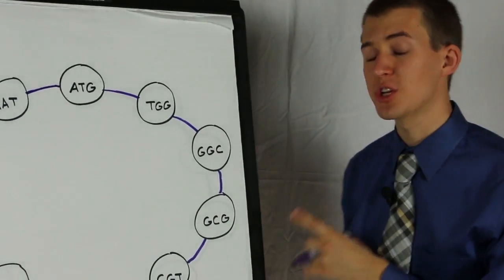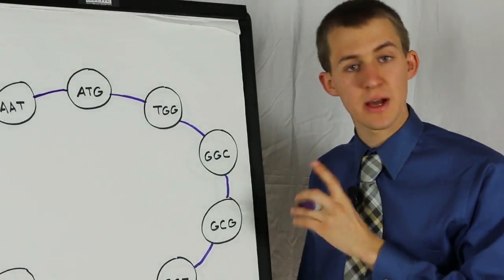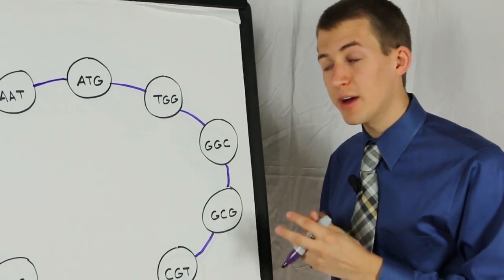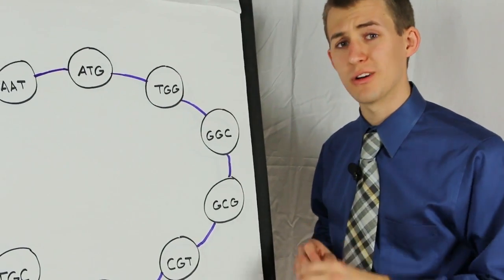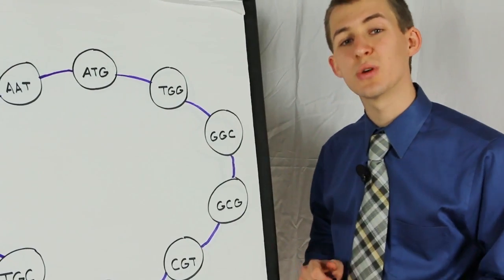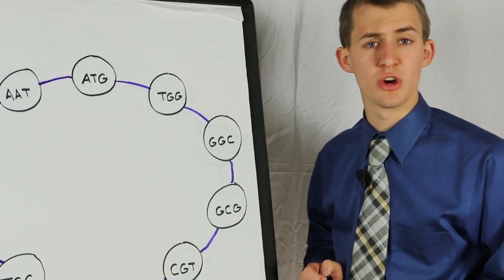This was how the human genome was first assembled in 2000. But with billions of nodes, finding a Hamiltonian path is hard. This is part of the reason it took years to sequence the human genome the first time.